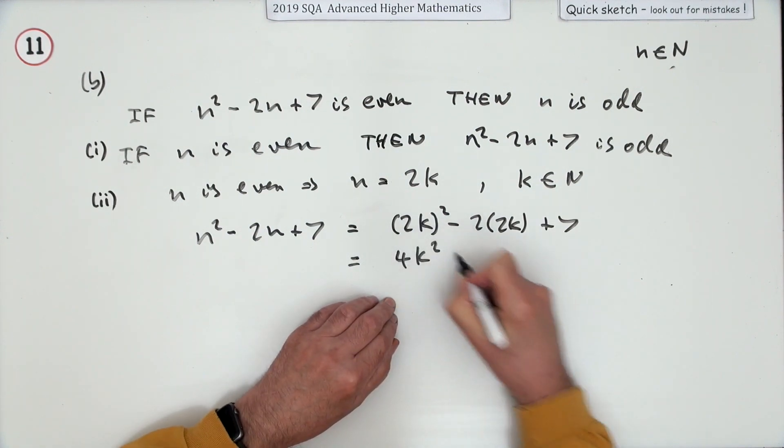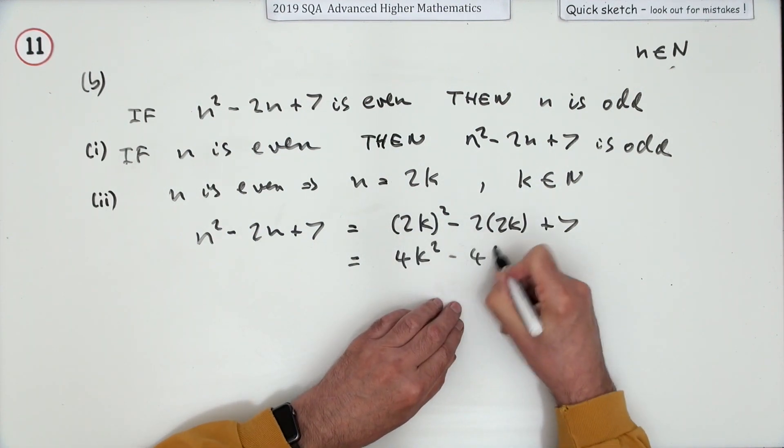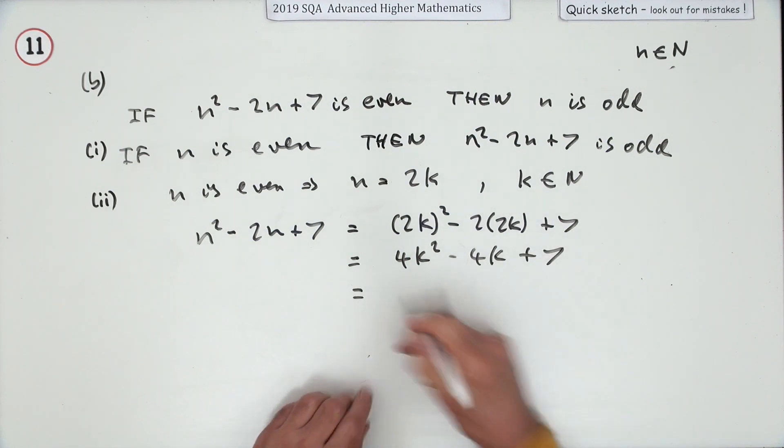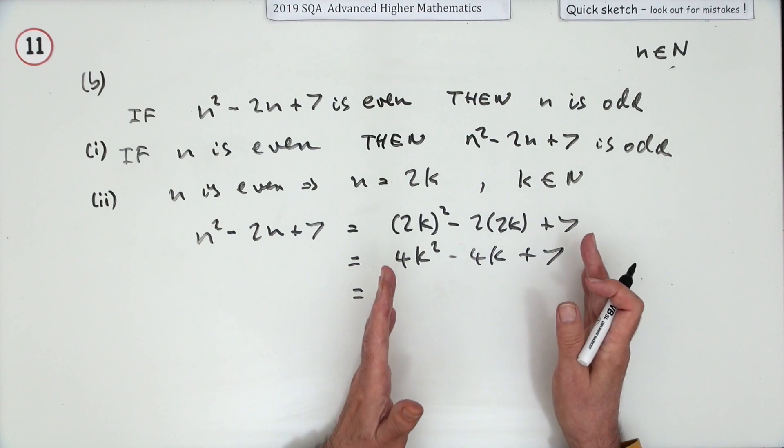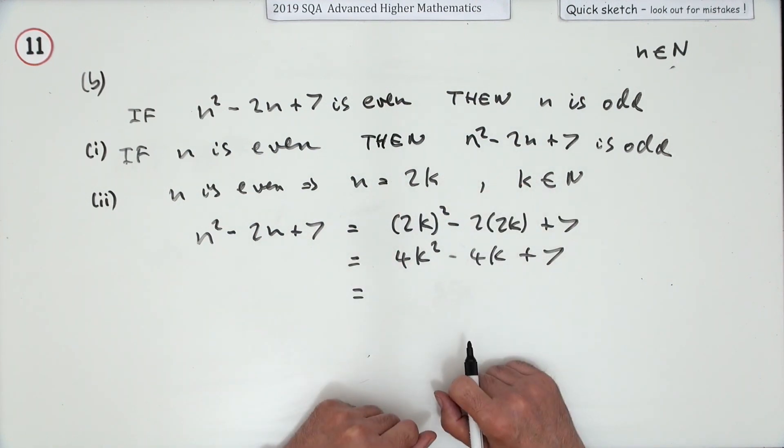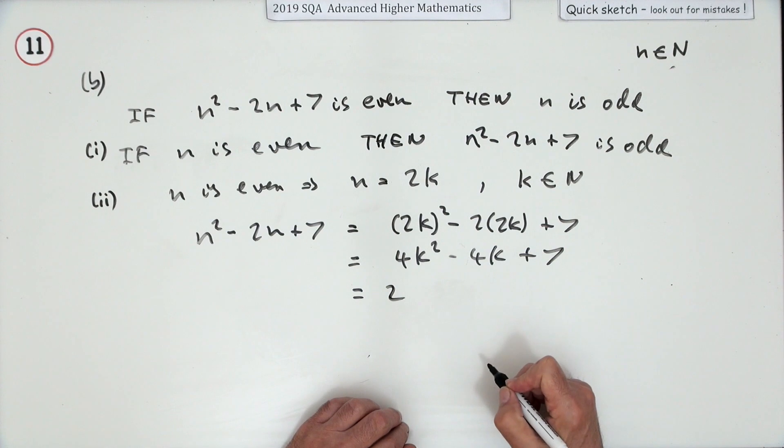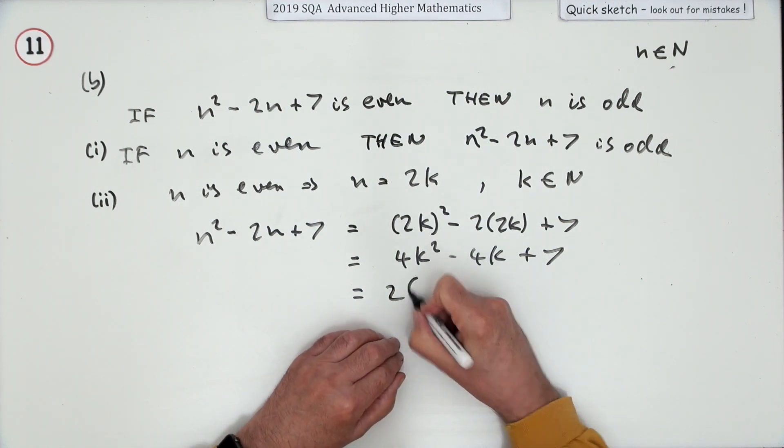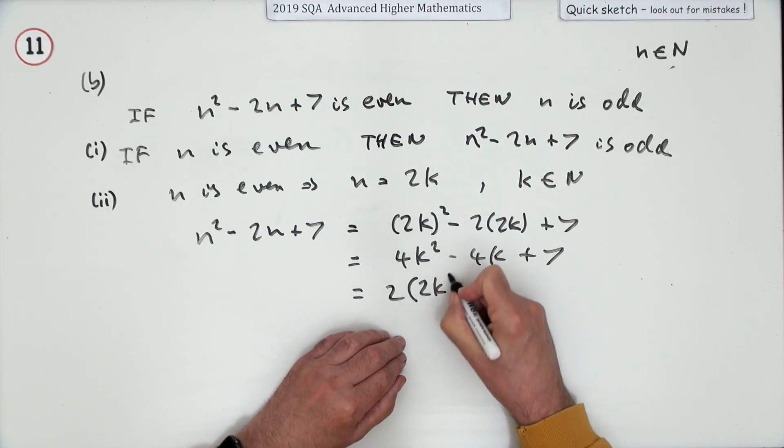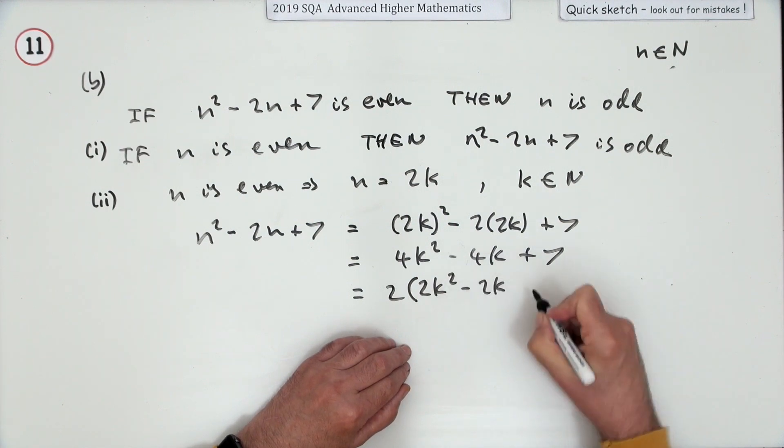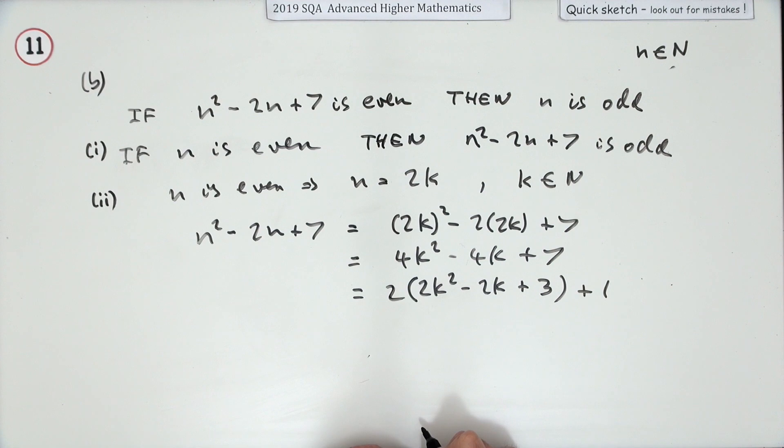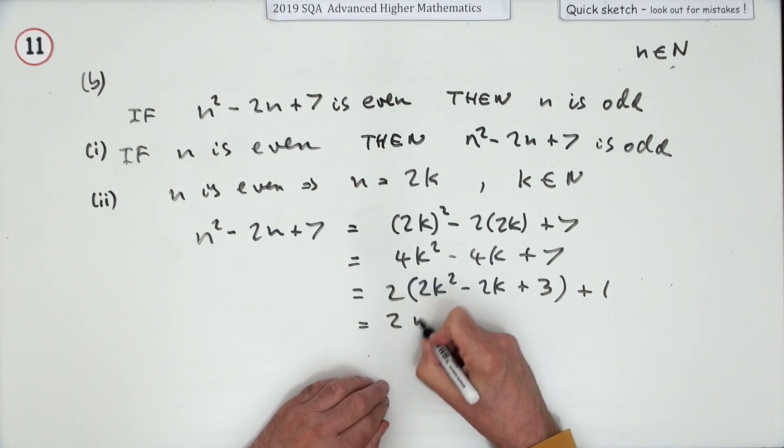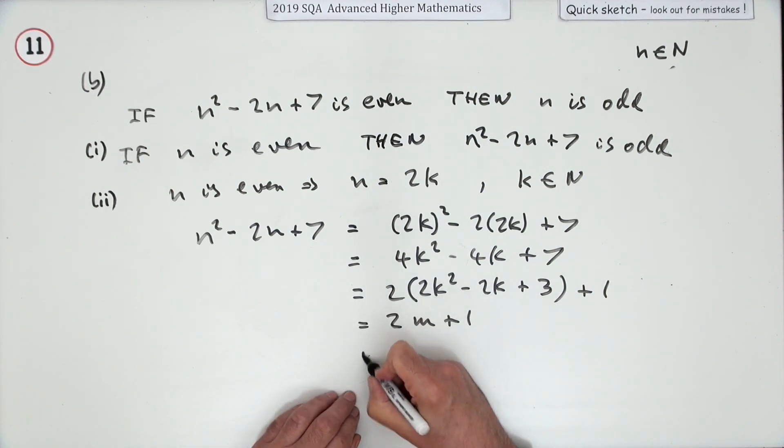Somehow you've got to rearrange to show that's an odd number. The way you do that is by putting it into this form with a plus or minus one. Take out a factor of two, so that's equal to 2(2k²-2k+3)+1. In other words, it's in the form of 2m+1, which is odd.